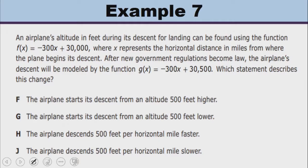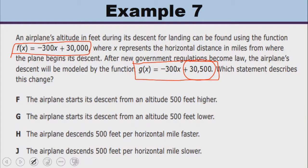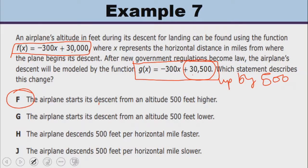In this final example, you are given functions F and G, where the only difference is that G has 500 more than F. So G is shifted up by 500. In the context of the airplane word problem, this means the airplane starts its descent from an altitude 500 feet higher. So the correct interpretation is that the plane starts its descent from an altitude 500 feet higher, and the answer is F.